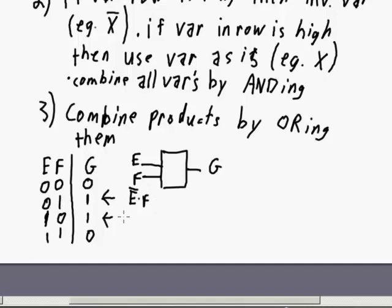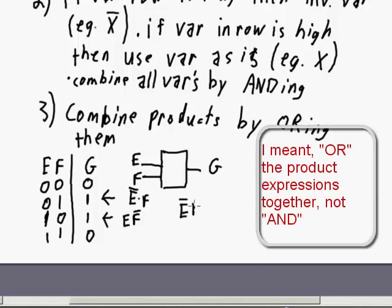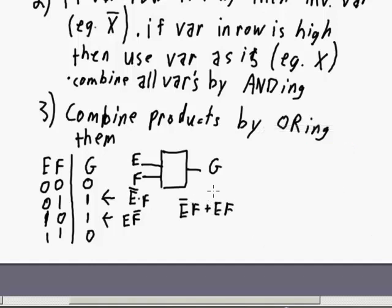And then for this row, we've got E and F also. The E is a 1, so it's not inverted. And F input is a 0, so it is inverted. So now we've got our two product expressions. And then we're going to OR the two product expressions together to give us the sum, the so-called sum of the products.